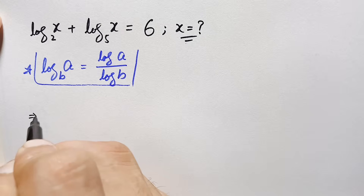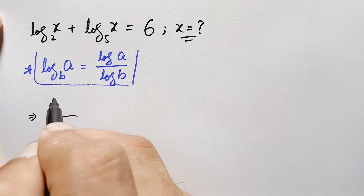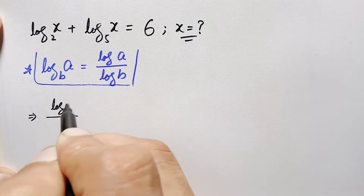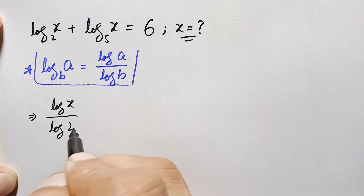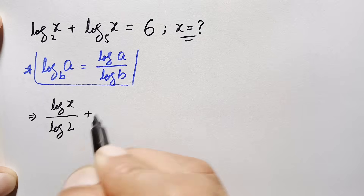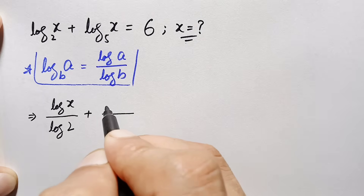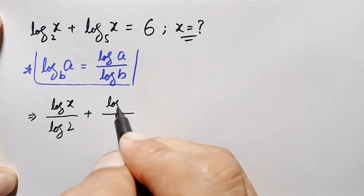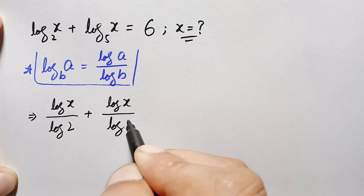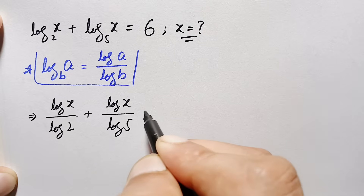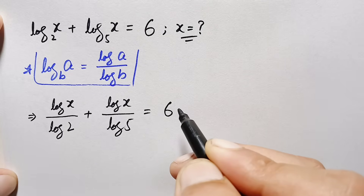Using this logarithm property, the left hand side will become: log of x divided by log of 2 plus log of x divided by log of 5 is equal to 6.